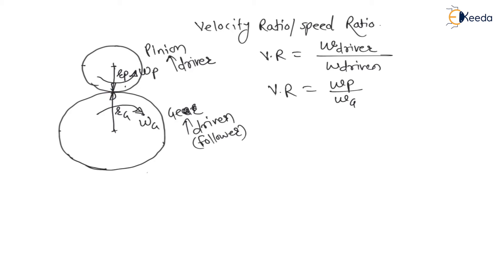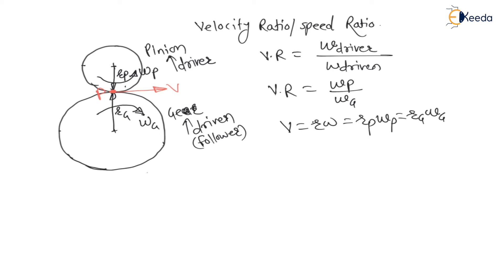The contacting point between the two gears is called the pitch point P. Due to clockwise rotation of the gear and anticlockwise rotation of the pinion, this point moves with a velocity given by r × ω. If we consider the radius of the pinion, we use ωp; if we consider the radius of the gear, we use ωg. Therefore, Rp × ωp = Rg × ωg.